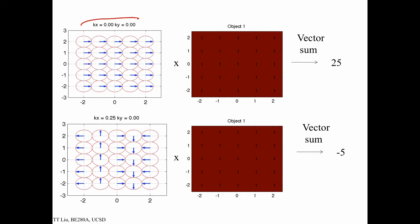Looking again at kx equals 0, ky equals 0 — this is exactly the example we just did, with a vector sum of 25 for an all-1s object. Now we vary kx to 0.25 while keeping ky equals 0. This corresponds to the period of 4 we've talked about previously.